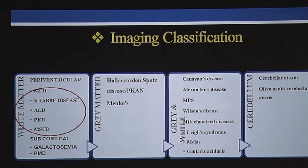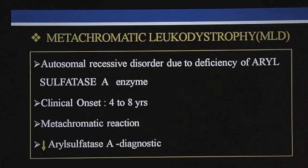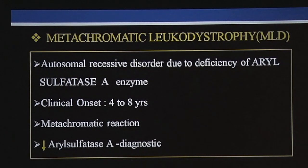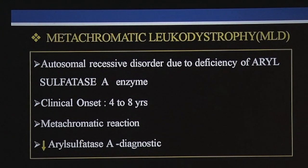We'll start off with five common conditions which affect periventricular white matter. The commonest is metachromatic leukodystrophy, which is an autosomal recessive disorder due to deficiency of arylsulfatase A enzyme in the brain. Clinical onset is between four to eight years of age, and in the blood you'll have a positive metachromatic reaction and decreased arylsulfatase A enzyme, which is diagnostic.